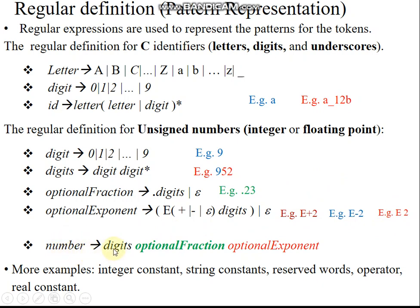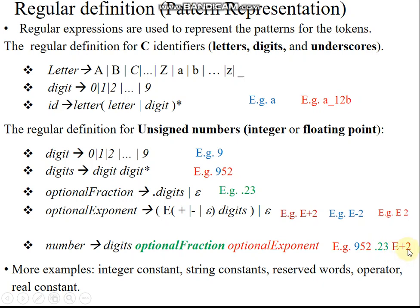The entire number is represented as digits — a single digit followed by any number of digits — then an optional fraction. If we need optional fraction, the number may be a floating point number requiring the fraction part: a decimal point followed by any number of digits. After that, if there is an exponent, we have E then a positive or negative symbol or epsilon. For example, 952.23E+2 represents a floating point number with exponent.